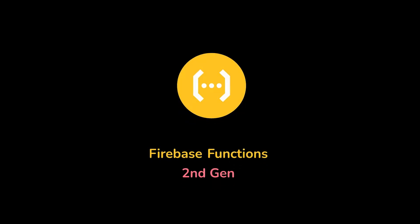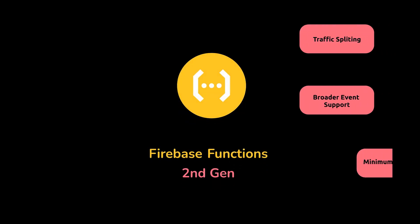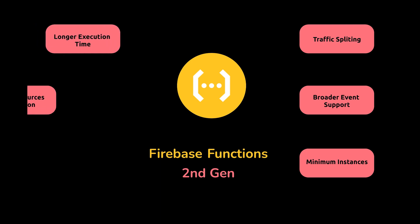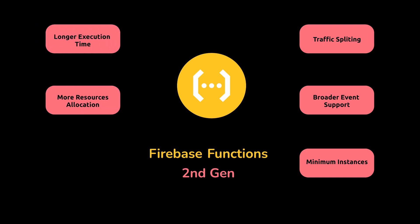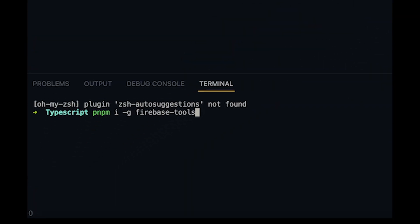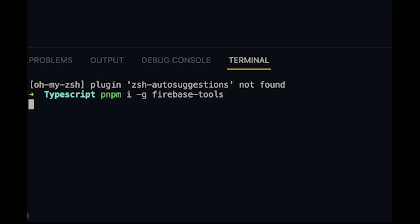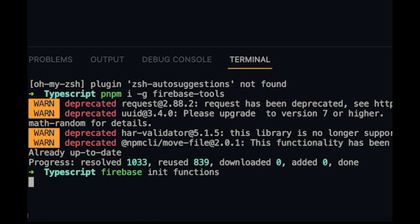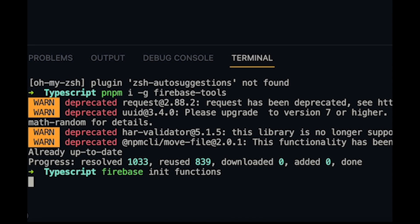Second generation cloud functions have landed in the Firebase ecosystem with many new features. Stay with me as I show you the most impressive ones that can reduce your app costs and your functions' cold starts. First, we need to update our Firebase CLI to the latest version, and also complete the regular functions setup, as there are no changes even for the second generation function.